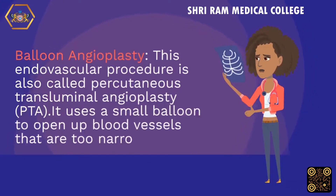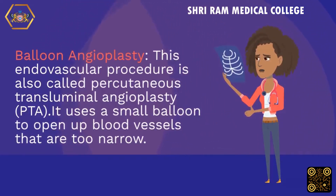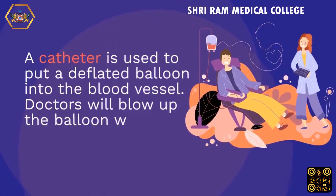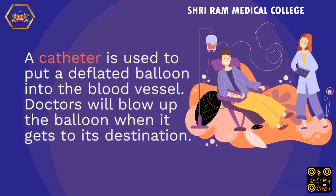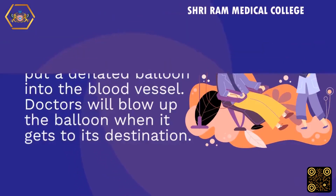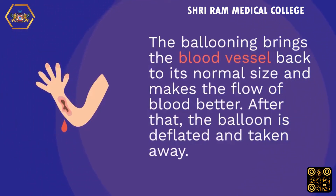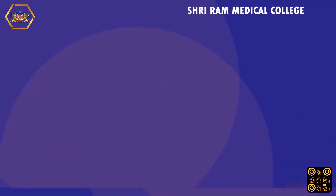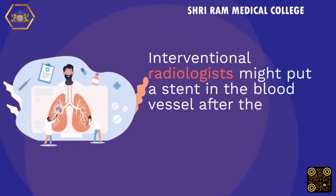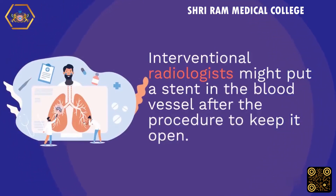Balloon angioplasty: this endovascular procedure is also called percutaneous transluminal angioplasty (PTA). It uses a small balloon to open up blood vessels that are too narrow. A catheter is used to put a deflated balloon into the blood vessel. Doctors inflate the balloon when it reaches its destination, bringing the blood vessel back to its normal size and improving blood flow. After that, the balloon is deflated and removed. Interventional radiologists might then place a stent in the blood vessel to keep it open.